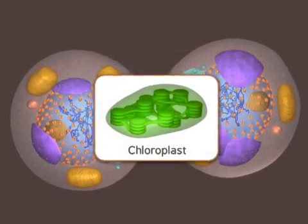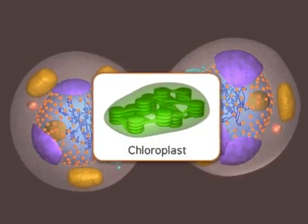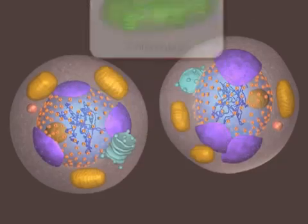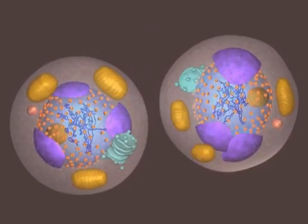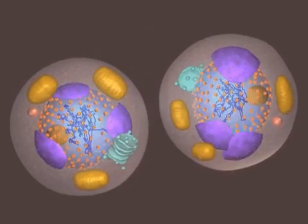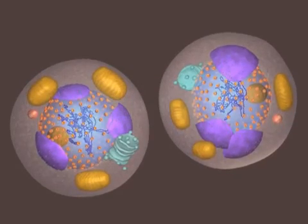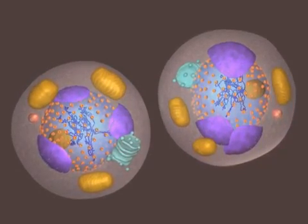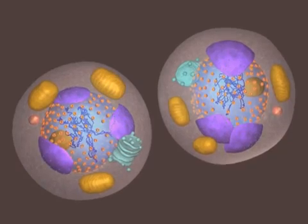Plant cells also have chloroplasts. Once split, the two new cells are now fully in the G1 stage of interphase and ready again to begin their growth.